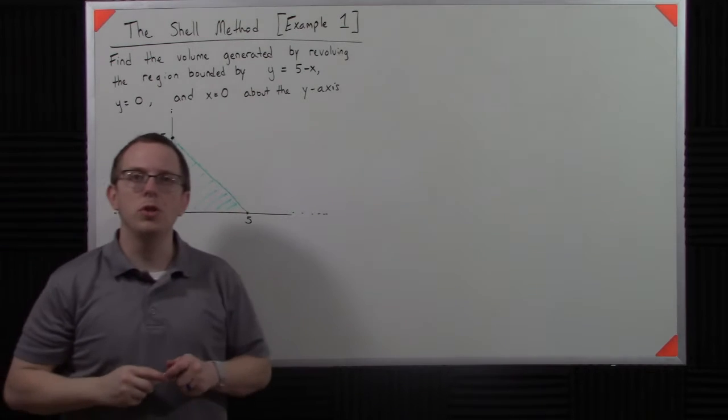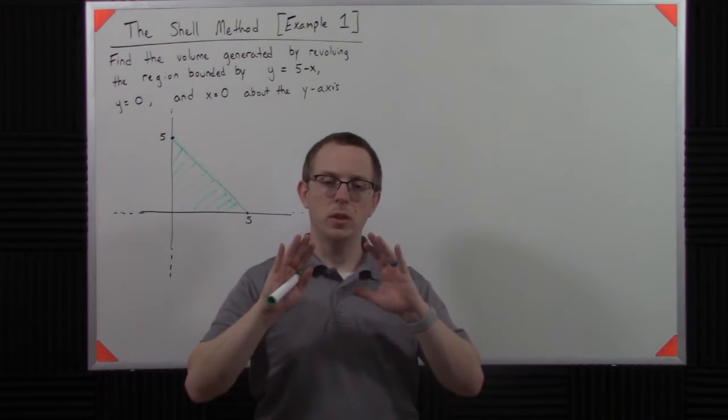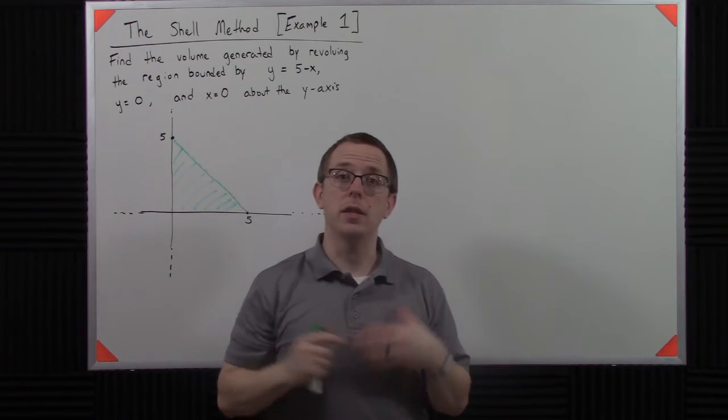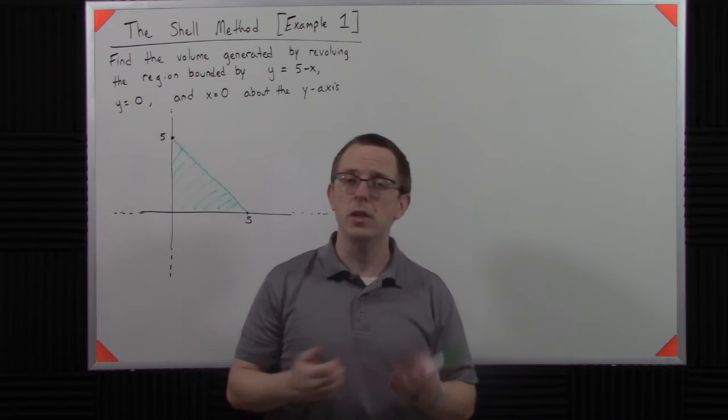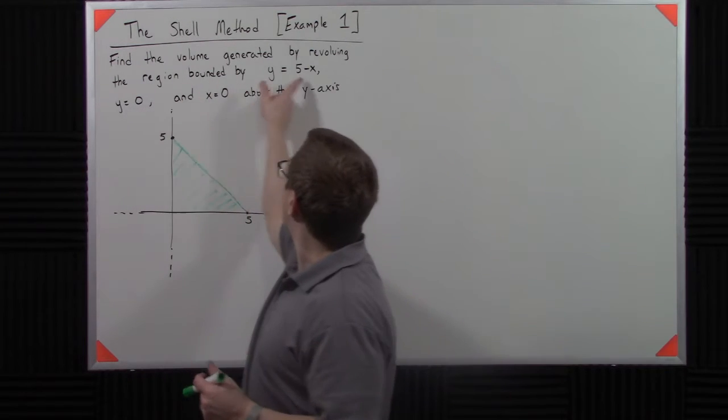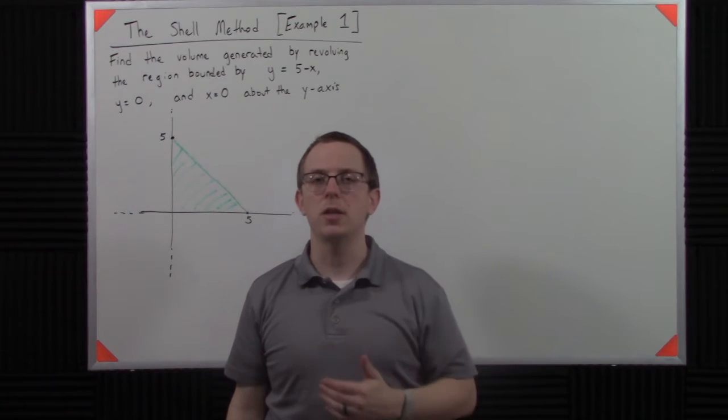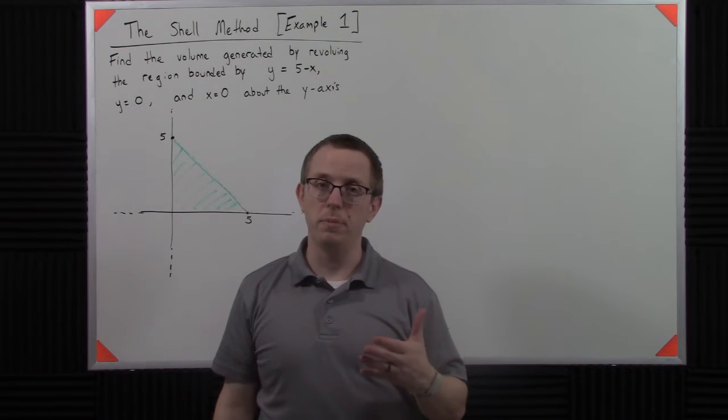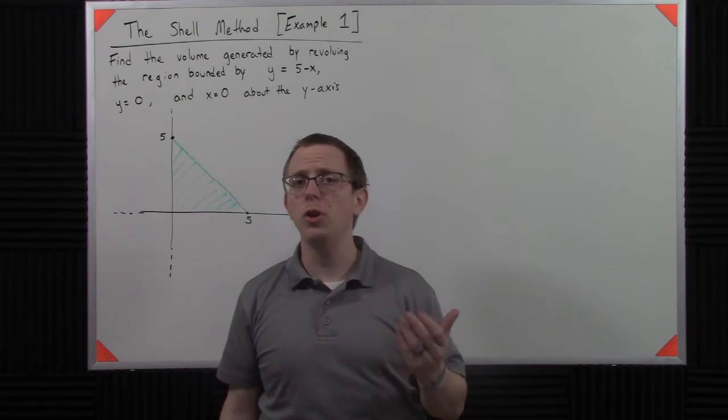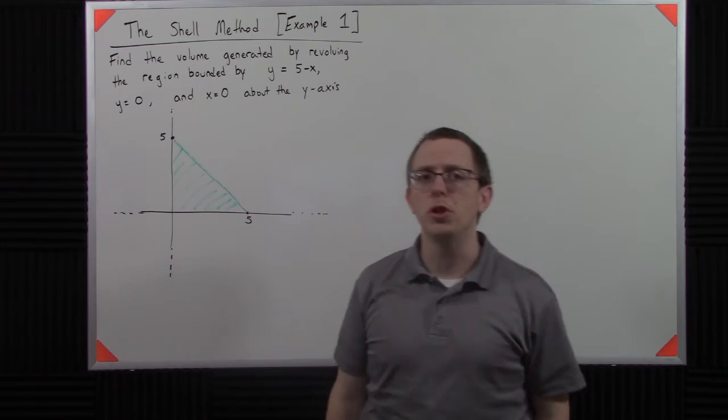So I'm going to use another color slightly to kind of fill this in. So we have that region and we want to find the volume we revolve around the y-axis. Now we could do this with a disk method easily, right? We would just have to rewrite this function as a function of y instead of a function of x. And then we could use the washer method, or the disk method. That's fine. And if you want to do that to verify, that's great too. But we're interested in figuring out how to do this with the shell method.